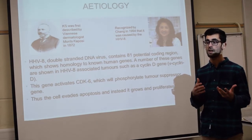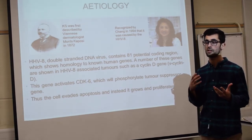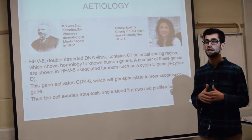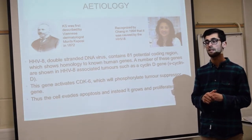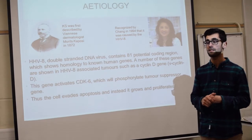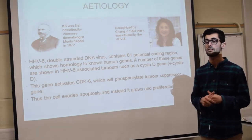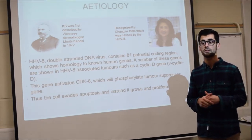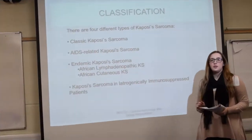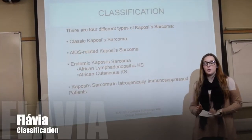CDK6 will subsequently phosphorylate RB genes, which are tumor suppressor genes. Therefore, cells which are infected by HHV8 will evade the G1 phase and proliferate and grow instead of undergoing apoptosis.